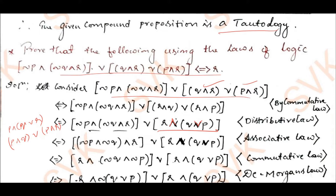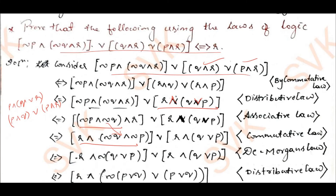Since both connectors are conjunction, I apply associative law by changing the brackets. Then I apply commutative law again to get r conjunction (negation p disjunction negation q). Inside this I also apply commutative law giving negation q conjunction negation p. Then I apply De Morgan's law: negation of (p conjunction q) is logically equivalent to negation p disjunction negation q.